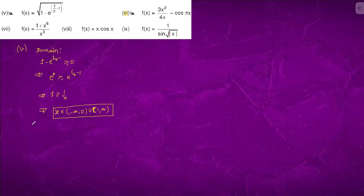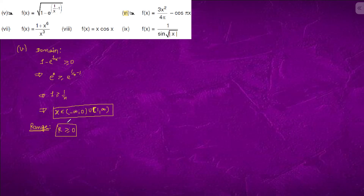This is the domain. Now it's time to find the range. Anything inside the square root, f(x), should be greater than or equal to 0, so the square root of that is also greater than or equal to 0. Therefore the range is also greater than or equal to 0. This is the range.